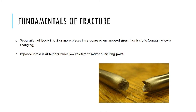So what about the fundamentals of fracture? When we speak about fracture, the first thing we think is that a body of material will separate into two or more pieces as a result of some kind of imposed stress. Usually that stress will be what we call static - a constant and slowly changing stress. Importantly, that imposed stress, when we are concerned with fracture, is at temperatures that are low relative to the melting point of the material. A bridge built from steel experiences ambient temperatures nowhere near the melting point of steel, yet it is still subjected to a constant static stress.